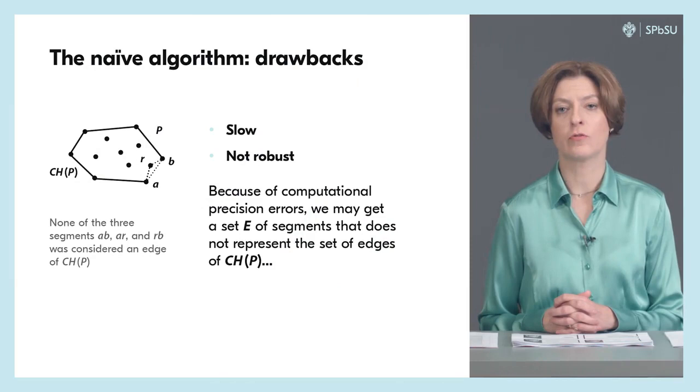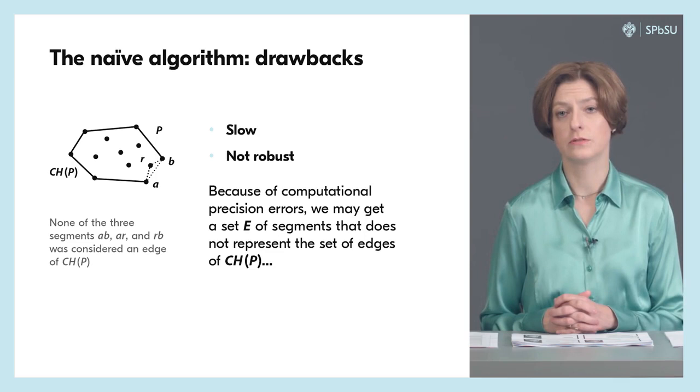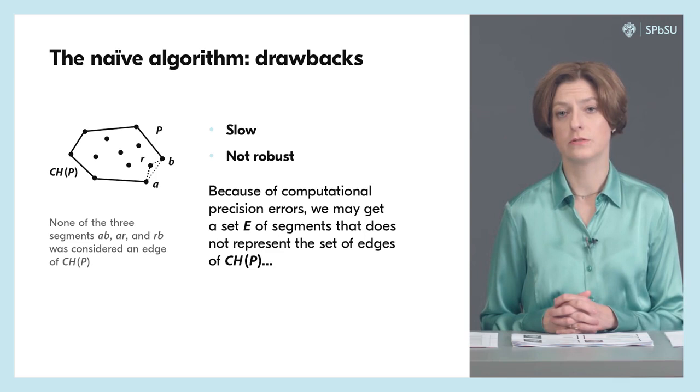Alternatively, some true edges may be missed. For the same triple of almost collinear points, it might have happened that none of the three segments they defined was recognized as a convex hull edge. And if this happens, once again we will be left with a set of segments that cannot give rise to a polygon boundary.